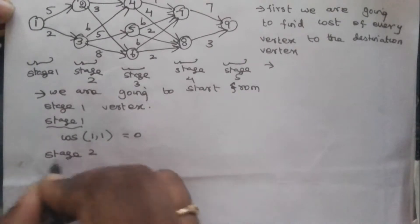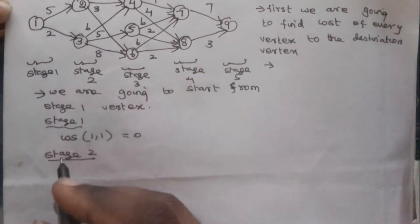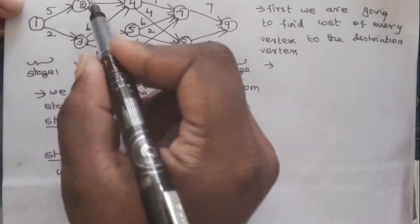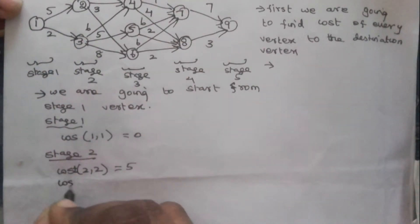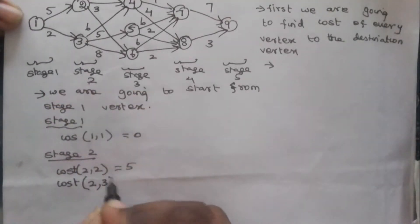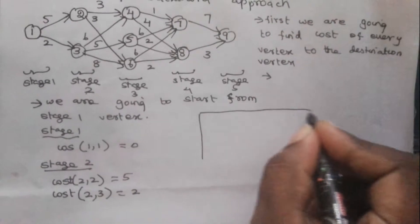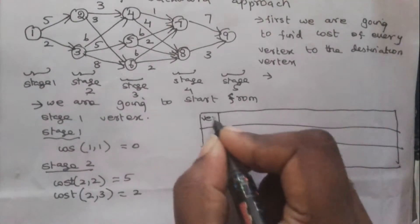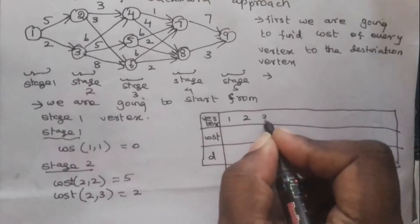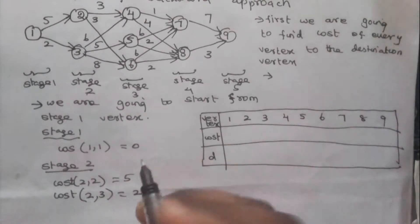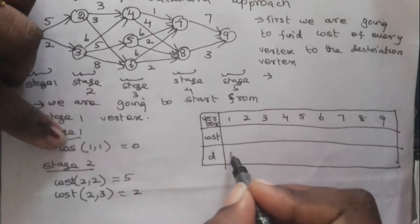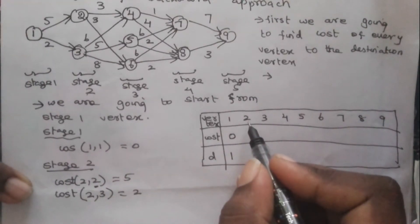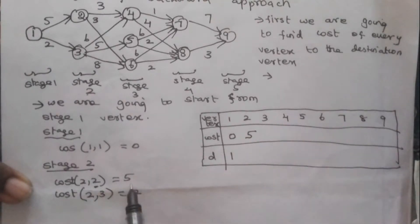Now we are going to find out the cost of stage 2 vertices. In stage 2, there are 2 vertices: vertex 2 and vertex 3. Cost of (2,2) is 5, and cost of (2,3) is 2. These values are already given in the graph.